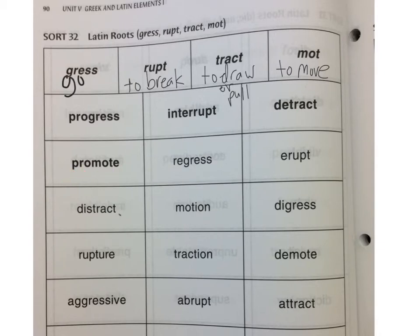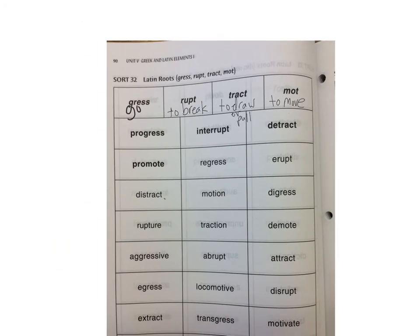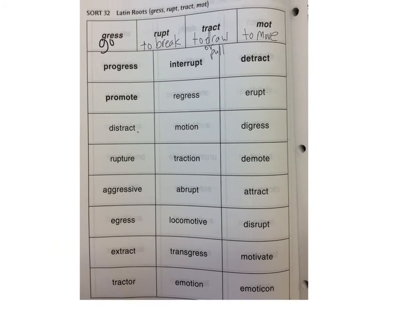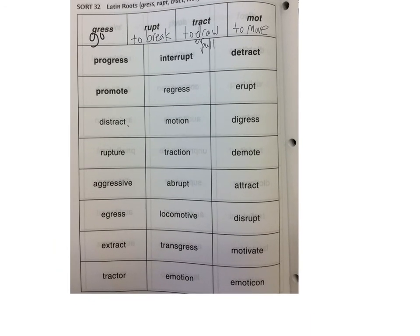So just use these different Latin roots to sort the words. I'll zoom out so you can actually see them all, and try to think about what each one means, then sort them in the columns. Pause the video, sort your words, and then go ahead and hit play.